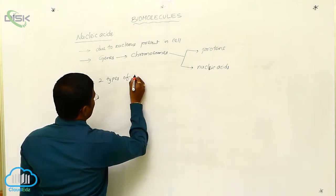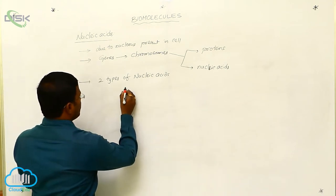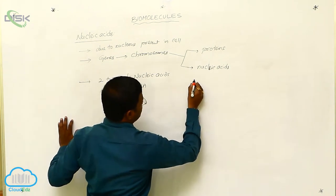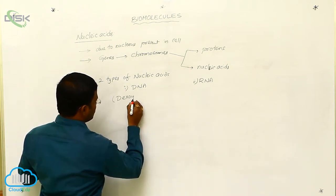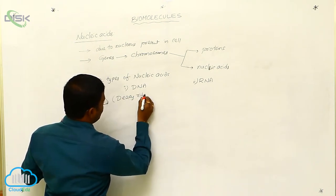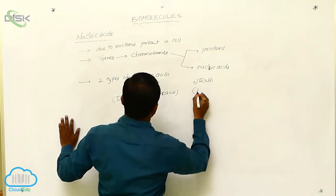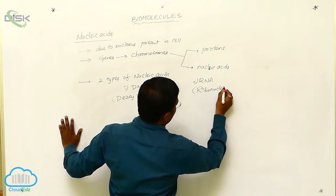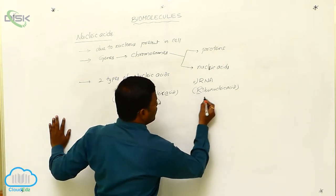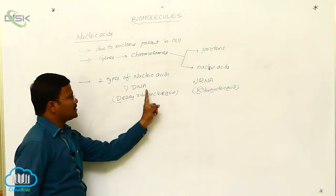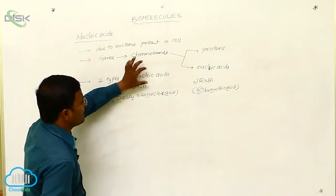We can consider nucleotides directly as nucleic acids. So chromosomes are made up of proteins and nucleic acids. In human beings, two types of nucleic acids are present: DNA and RNA. DNA stands for deoxyribonucleic acid, and RNA stands for ribonucleic acid.